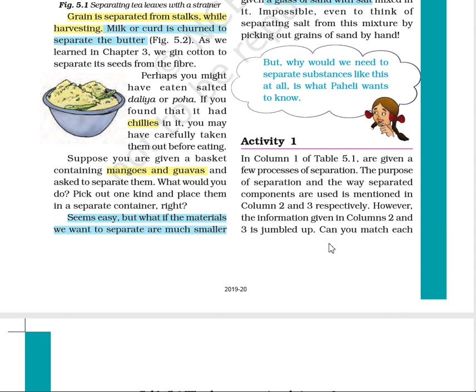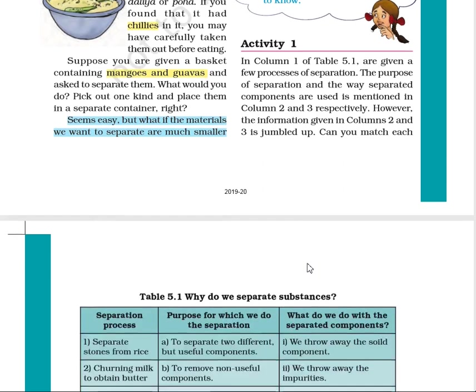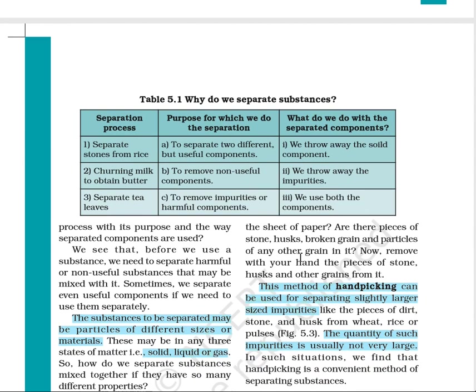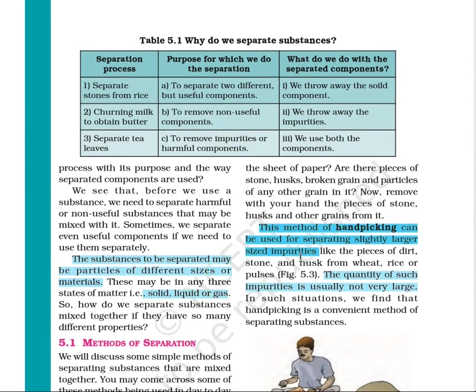Activity 1: We are going to study some of the reasons why we separate components and why it is required. We refer to table 5.1 — 'Why do we separate substances?' — which contains some examples we will study further in the chapter.